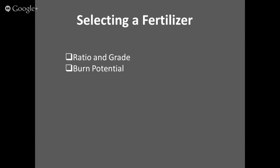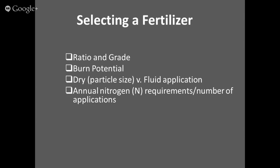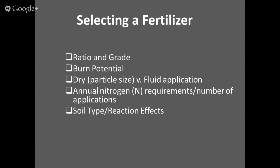The topic of today's chat is dry versus fluid applications. What are the annual nitrogen requirements and how many applications are you going to put out? It's important to stay fluid in your approach. Soil type, reaction effects, and what adjustments do you need to make for seasonal changes, turf establishment, or recovery? Also, what type of previous applications have been put out, and how much residual nitrogen is in the soils? This will impact how much nitrogen you need to put out at what rates and sources in a given season.